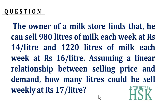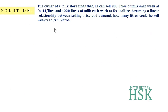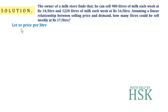To solve this question, we have to first calculate the linear relationship between the selling price and the demand, and after that we have to tell how many liters could he sell weekly at rupees 17 per liter. So let x be the selling price and y be the quantity of milk in liters, that is the demand.